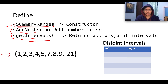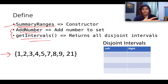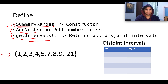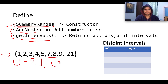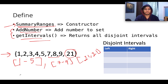Let's hypothetically assume your data set is: 1, 2, 3, 4, 5, 6, 5, 4, 5, 7, 8, 9, and 21. The disjoint intervals in this data set would be: elements from 1 to 5, so the first disjoint set is [1,5]; the second is 7 to 9, so [7,9]; and the third is 21, treated independently as [21,21].